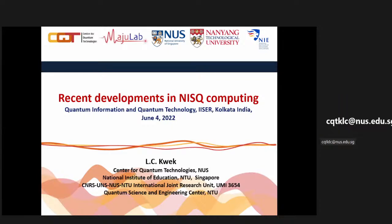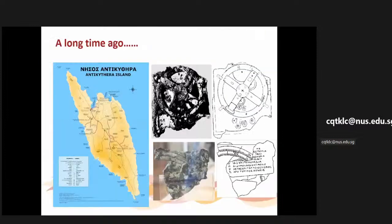Let me continue. I would like to mention that a long time ago, on a nearby island close to Greece — Antikythera Island — there was a discovery made about 100 years ago. What they salvaged was an instrument subsequently known to have very sophisticated features. After analysis, it is probably one of the first analog computers ever discovered.